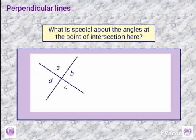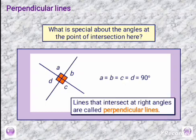Moving to perpendicular lines. Perpendicular lines normally meet at 90 degrees. And therefore in this case, angles A, B, C and D are each equal to 90 degrees. Therefore, lines that intersect at right angles are perpendicular lines.